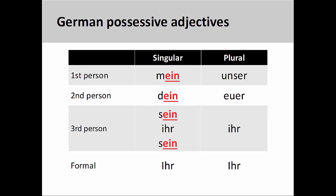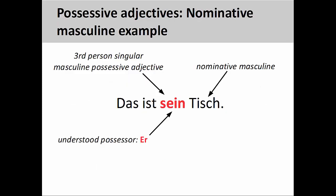You may find it useful to review the presentation on indefinite articles before continuing with this one. Let's decline a few possessive adjectives to see how they work. In this sentence, 'Das ist sein Tisch' — that is his table — the number and gender of the understood possessor, er, agrees with the number and gender of the possessive adjective. It is third-person singular masculine.